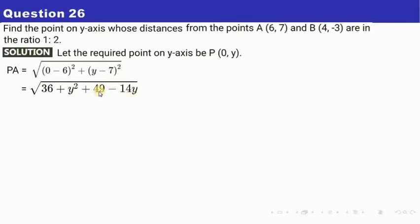Now let us simplify here. So we have 49 plus 36. So after simplification you have y² - 14y, so 36 plus 49 becomes 85. So this is your PA.